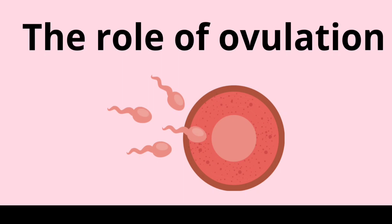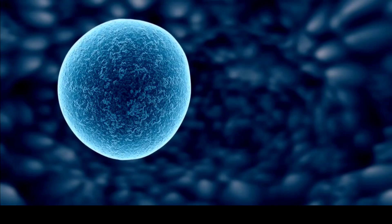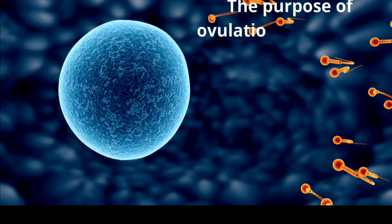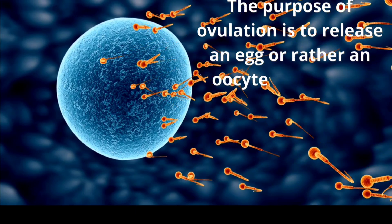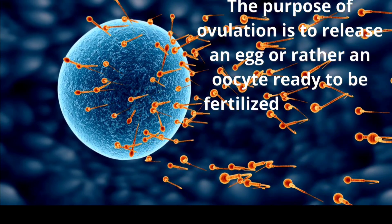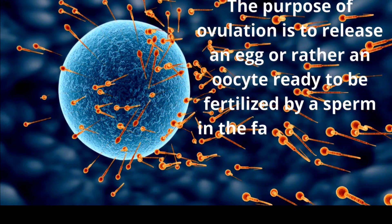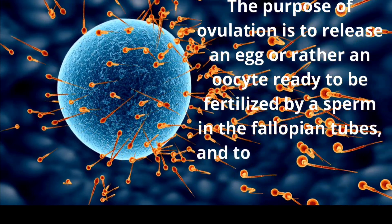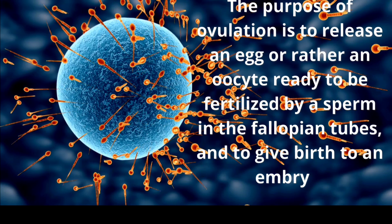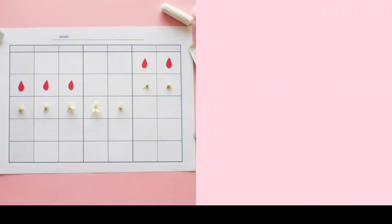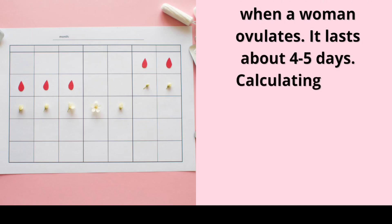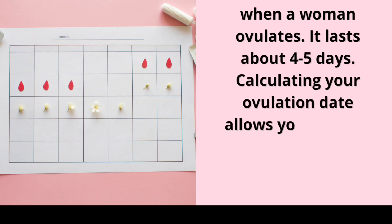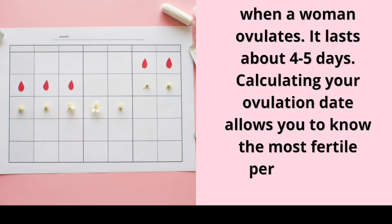The role of ovulation: the purpose of ovulation is to release an oocyte ready to be fertilized by a sperm in the fallopian tubes and to give birth to an embryo. When a woman ovulates, it lasts about 4 to 5 days. Calculating your ovulation date allows you to know the most fertile period of the menstrual cycle.